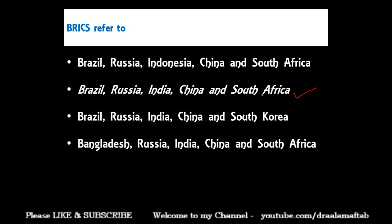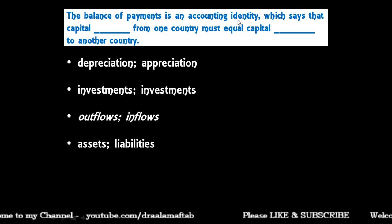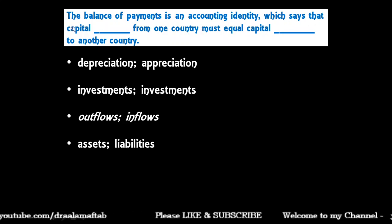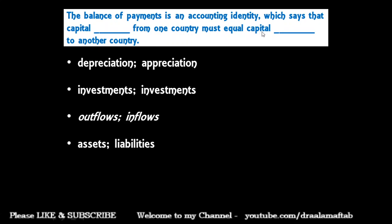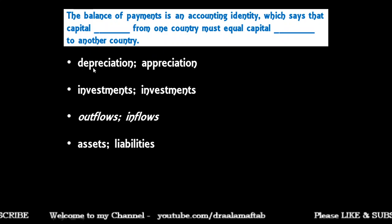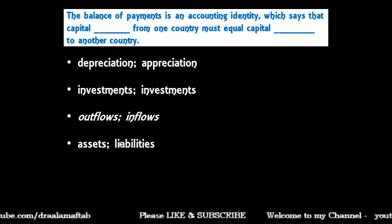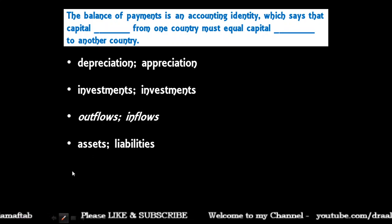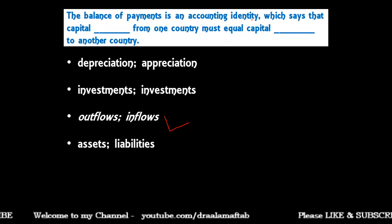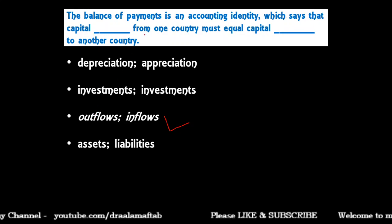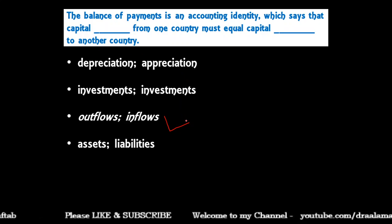Next question: balance of payments is an accounting identity which says that capital dash from one country must equal capital dash to another country — depreciation/appreciation, investments and investments, outflows and inflows, or assets and liabilities? The correct answer is outflows and inflows. The balance of payments accounting identity says that capital outflows from one country must equal capital inflows to another country.